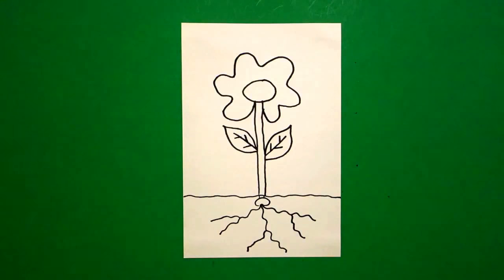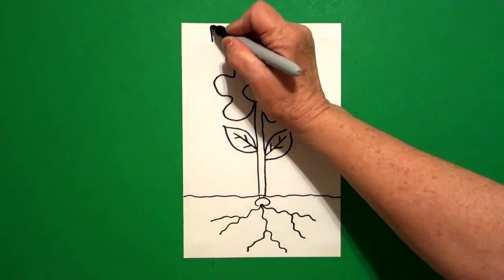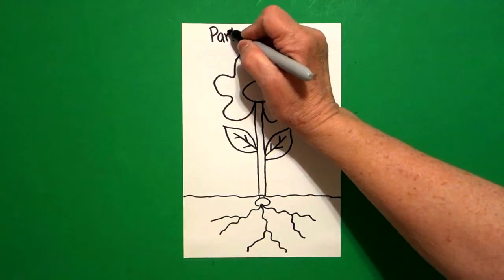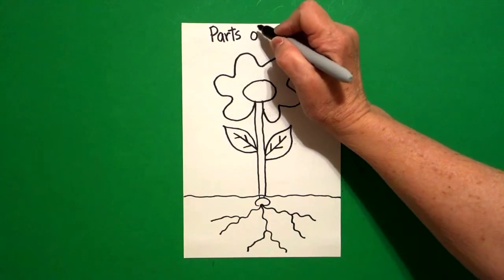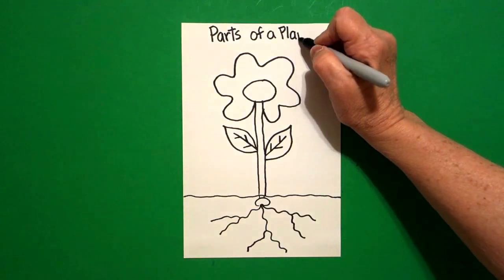Okay, all right, now because this is kind of like a science project, the first thing we're going to do is we're going to label our picture and this is called parts of a plant.